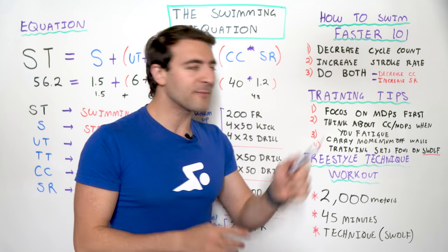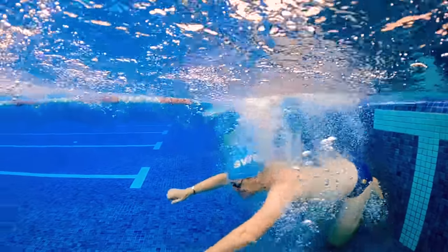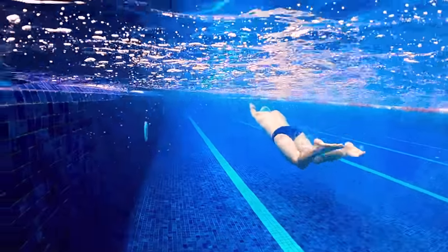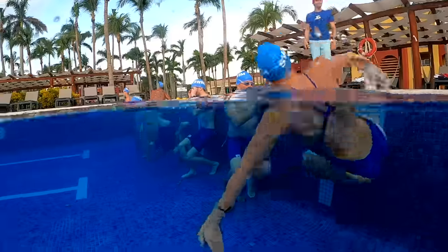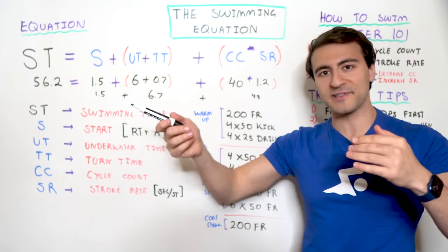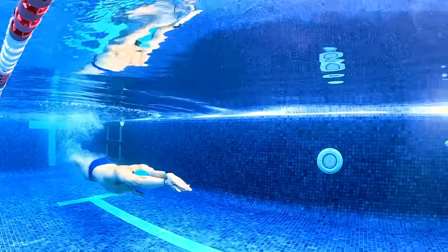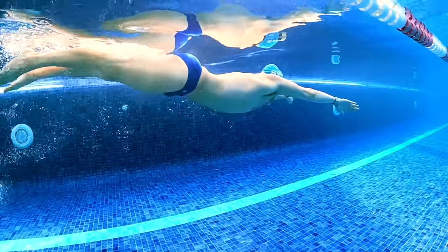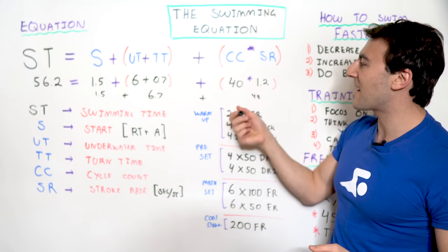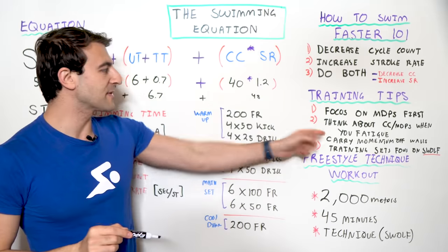Tip number three is to carry momentum off the wall. You want to carry momentum off the walls so you're really focusing on your underwater time. Maybe your underwater time is still six seconds, but you went further off the wall. Because you're able to maximize your underwater time and go further distance in the same amount of time, your cycle count is actually going to be lower — you still spend six seconds underwater but you covered more distance. So your cycle count goes down even though the underwater time maintained, because you went further on the underwater.